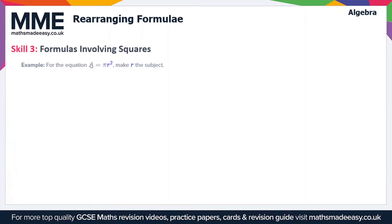But here we're going to start with looking at formulas involving squares. For the equation A equals πr squared, make r the subject. Let's just rewrite the formula: A = πr². You might recognize this as the area of the circle, so actually this is quite a common question to be faced with because you might be given the area and have to work out the radius of the circle.